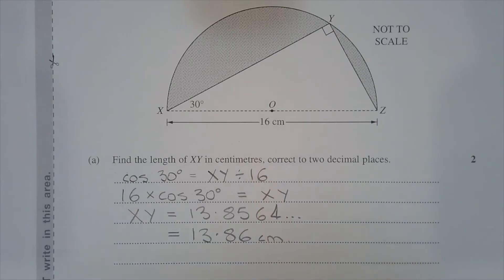Multiplying both sides by 16 to make XY the subject of the formula, we have 16 multiplied by cos of 30 degrees is equal to XY. Evaluating the left hand side, we have 16 multiplied by cos of 30 is equal to 13.8564 and so on.